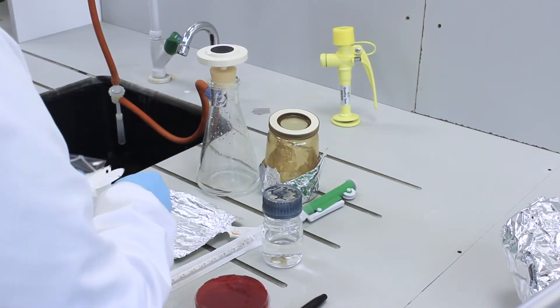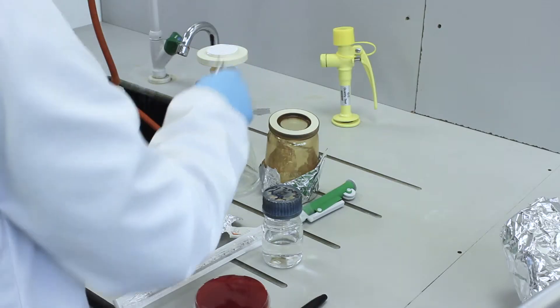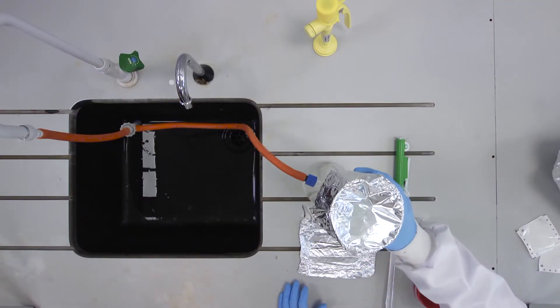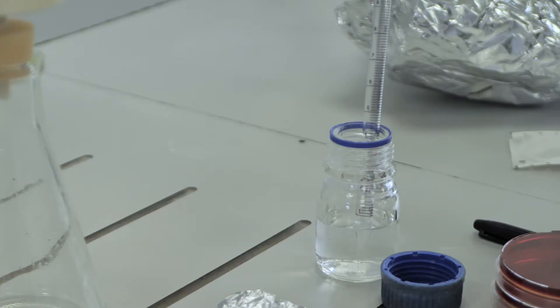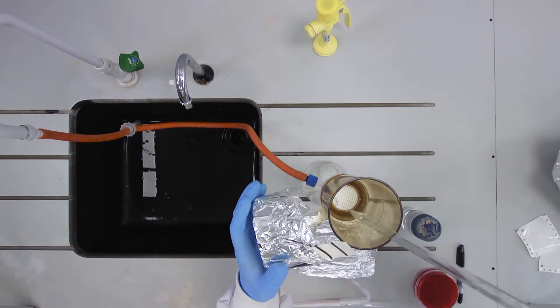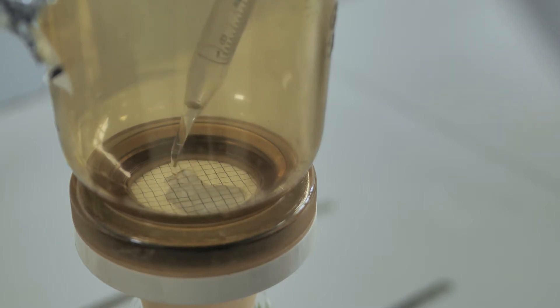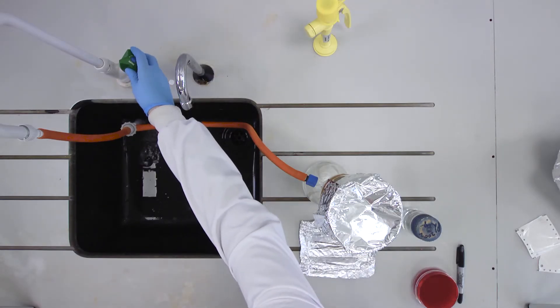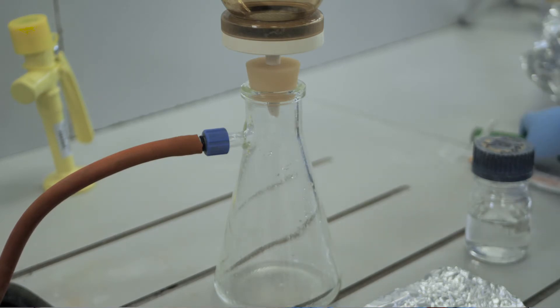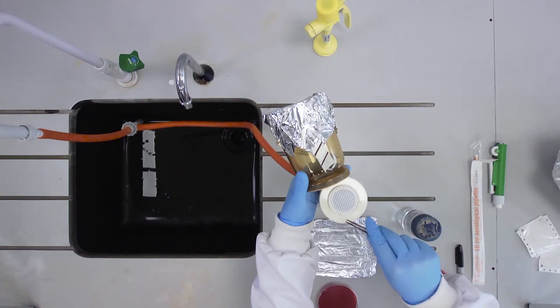Transfer another sterile membrane to the filter unit. This time pipette 1ml of the water sample into the unit using the same pipette as before. Again, draw the liquid through the filter using the Venturi vacuum pump and transfer the membrane to the surface of a membrane laurel sulfate plate.